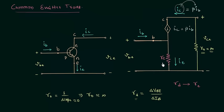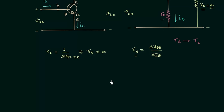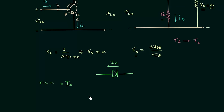We represent this dynamic resistance as R subscript E, where E stands for emitter. We have resistance R_D in place of the diode, and this gives us the complete RE model of the transistor. The only remaining step is to calculate the value of resistance R_D.